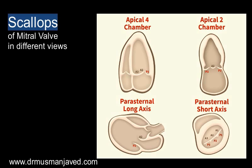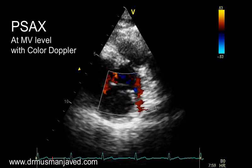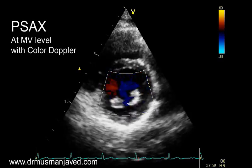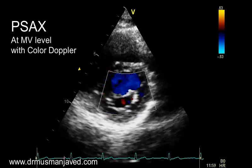You can appreciate the anterior and posterior mitral leaflets with all three scallops, starting laterally from A1 to A3 and P1 to P3. It's worth mentioning that in the parasternal long axis view we can see only A2 and P2; in the apical 2-chamber view we can identify P1, A2, and P3; and in the apical 4-chamber view we can see P1, A2, and A3. Returning to the short axis of the mitral valve, apply color Doppler.